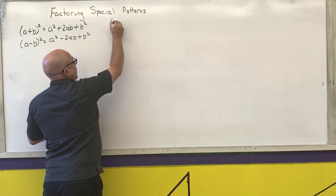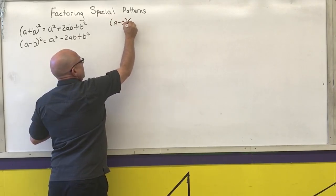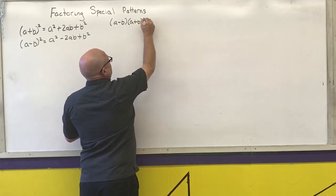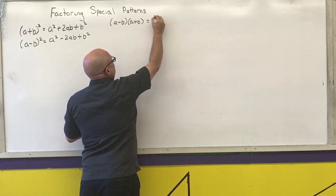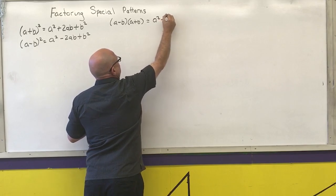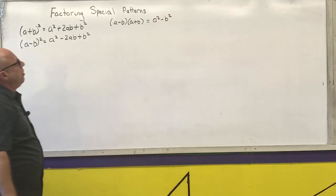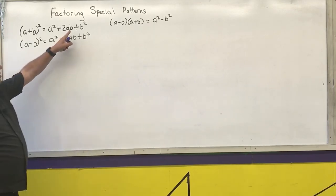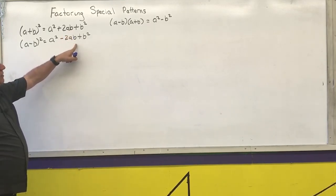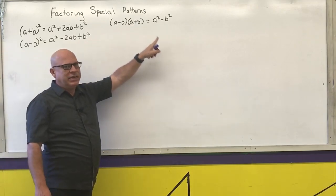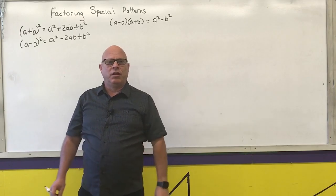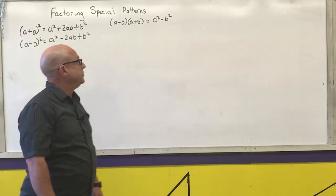We had our difference of squares pattern, which is the first term squared minus the last term squared. So those are our quadratic patterns. We're going to cover how to factor, if it's in the right-hand side, to turn it back into the left-hand side, so that I could use that information to solve a quadratic equation.